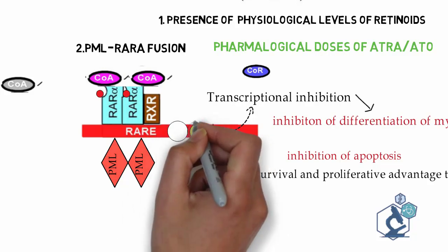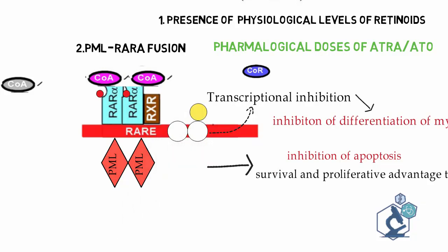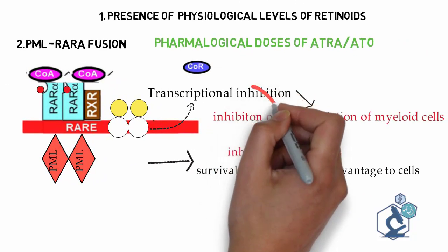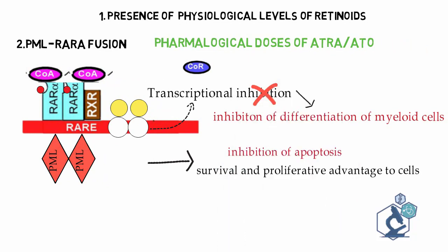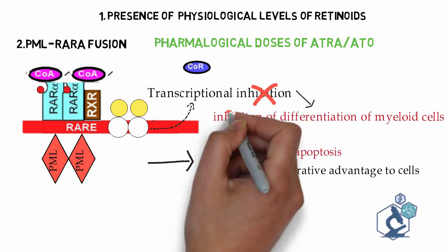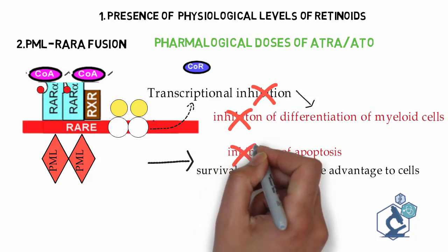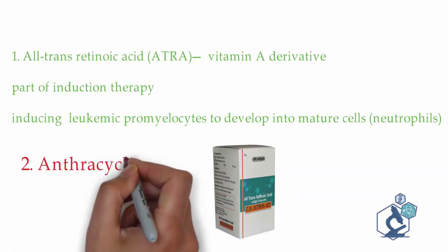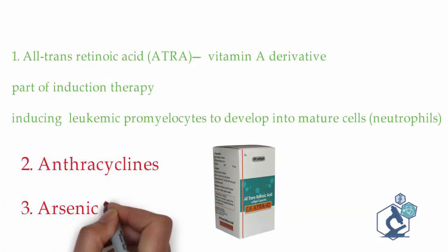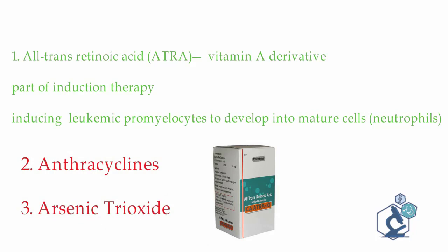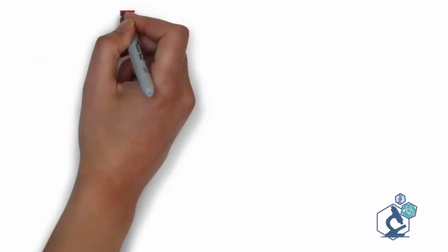ATRA binding causes acetylation of the complex and activation of transcription. Thus, ATRA removes the inhibition of differentiation of myeloid cells and also restores apoptosis. Other drugs used include anthracyclines and arsenic trioxide. Treatment-related complications will be discussed in later videos.